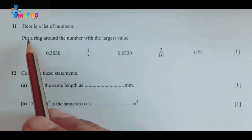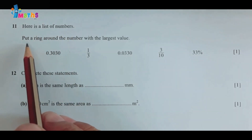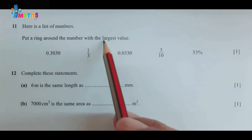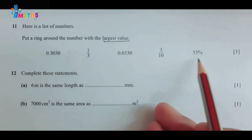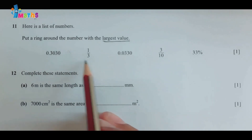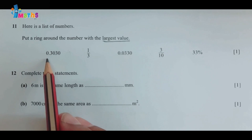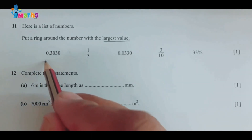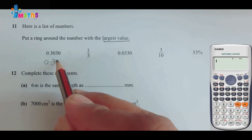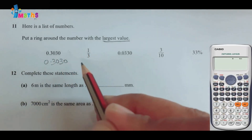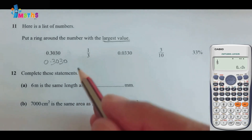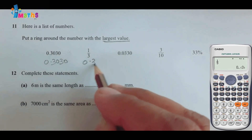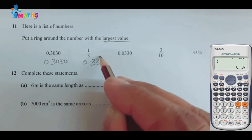Question number eleven: here is a list of numbers, put a ring around the number with the largest value. We will have to check the largest value. What we will do is convert everything into decimal so that we can compare easily. The first number is already in decimal: 0.303. One over three — we can convert with a calculator: one divided by three will equal 0.333 recurring.